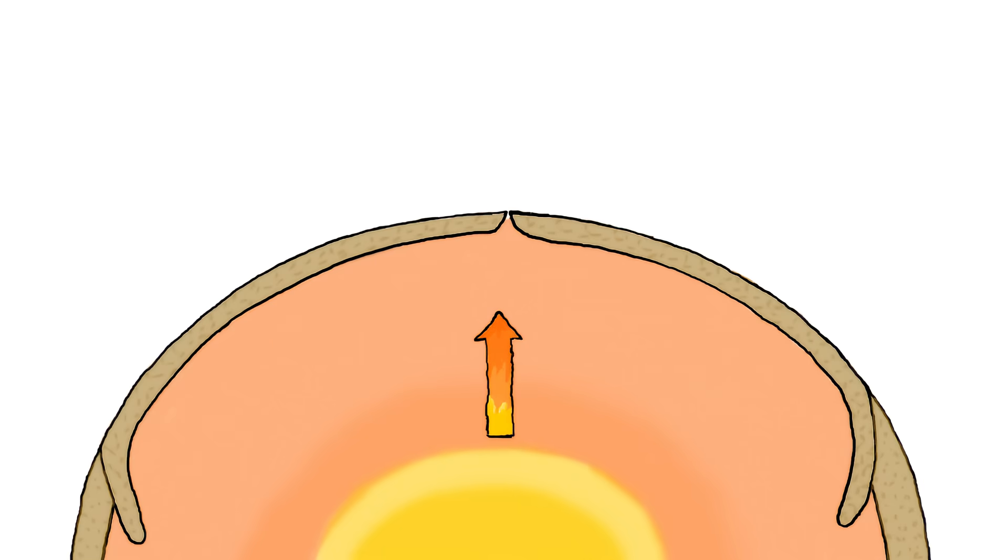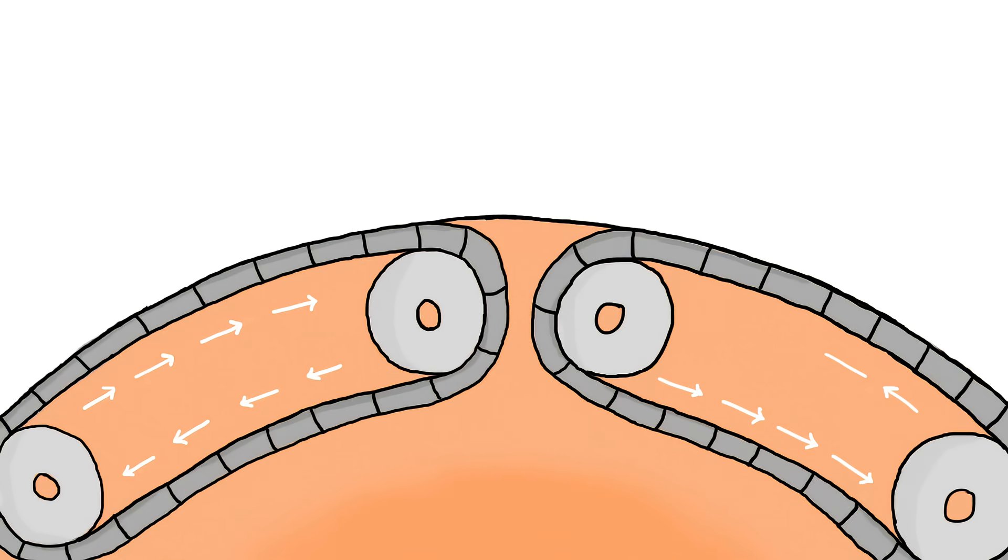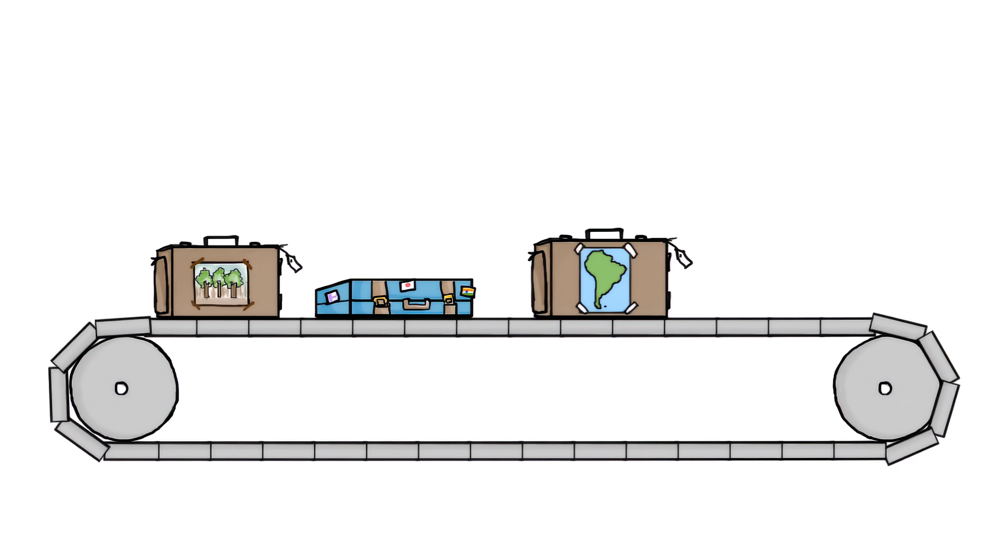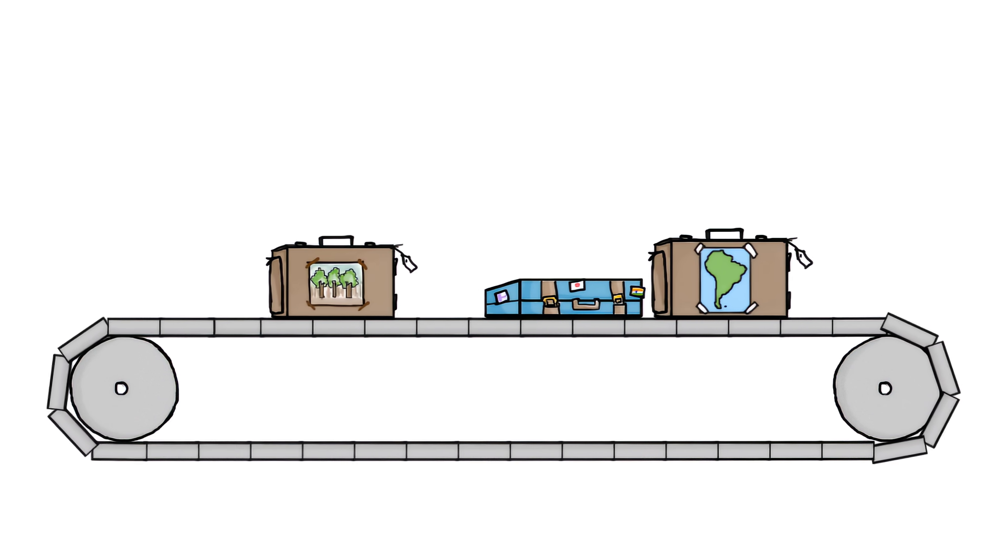Hot mantle rock rises from the core and moves along under the crust until it grows cool and heavy and sinks back down again. But the plates aren't just passively riding these currents around like a bunch of suitcases at the baggage claim. They can't be, because some of the plates are moving faster than the currents underneath them.